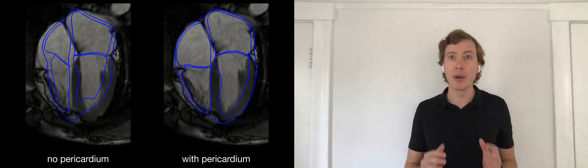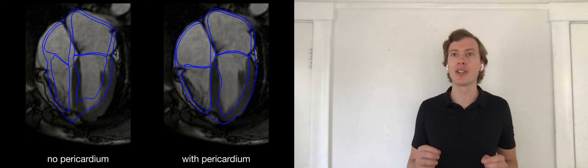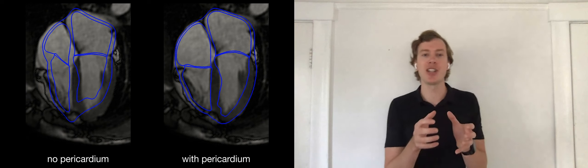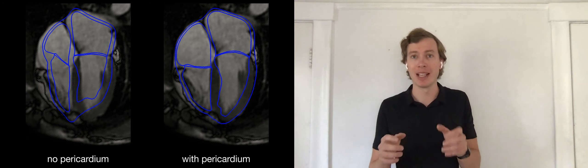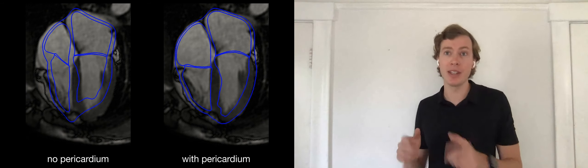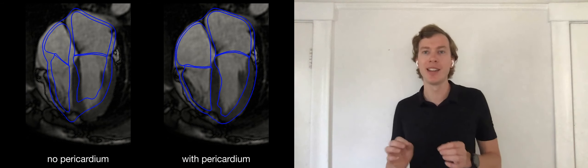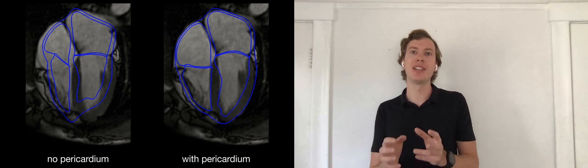We can see that on the left, without the pericardium, the model contracts inward and doesn't really match the outer shape of the heart. Whereas with the pericardium on the right, we can observe that model and image match nicely on the outside of the heart as well as on the inside.